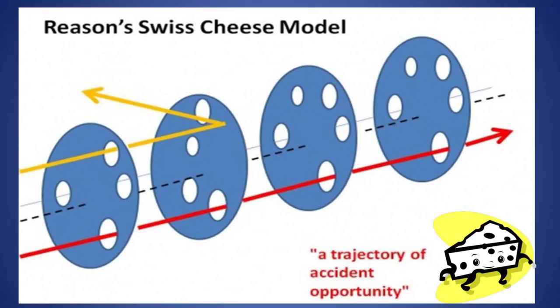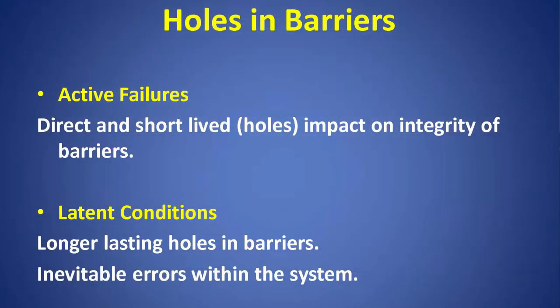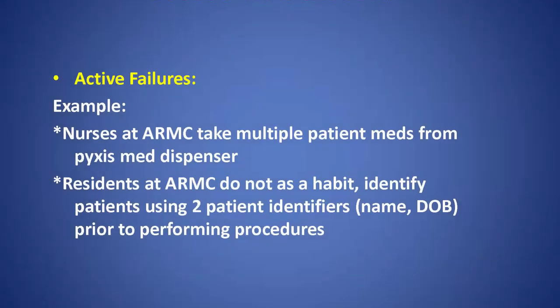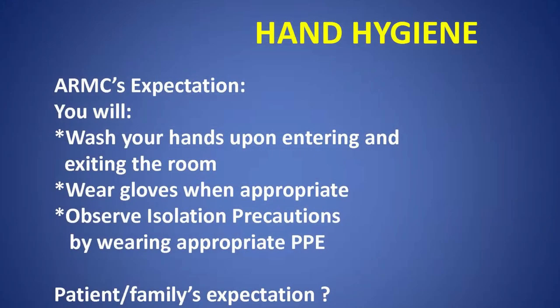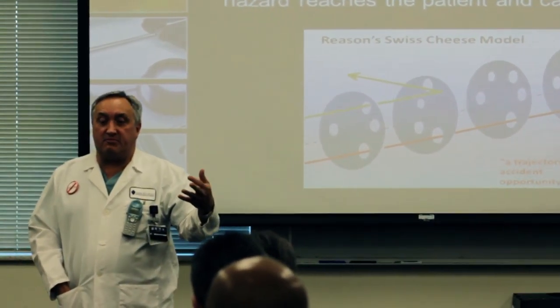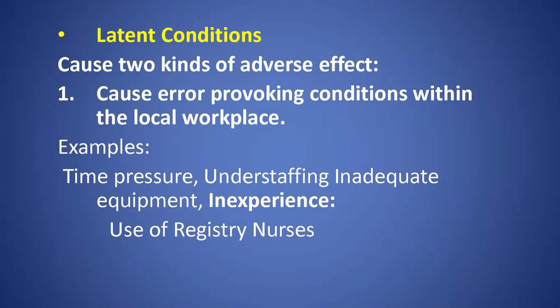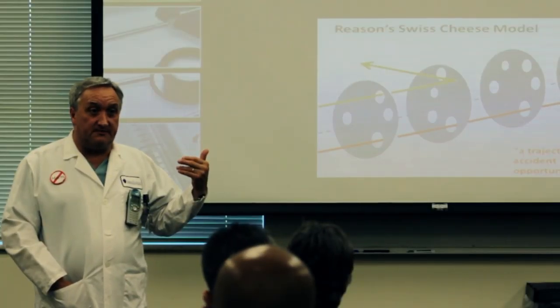When we talk about barriers to patient harm, can you give me an example? Patient identifier — really our policy about how we identify patients before we do something to them. Similarly, hand hygiene is another policy, and our MedPass policy is another barrier. The holes in barriers come and go: you have a policy to wash your hands upon entering a patient's room, but sometimes you get distracted and forget. The hole doesn't happen all the time — just sometimes.